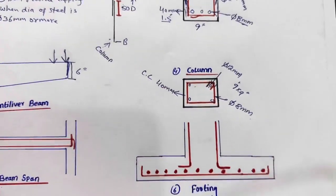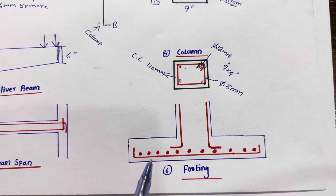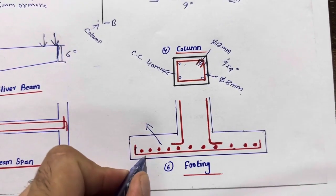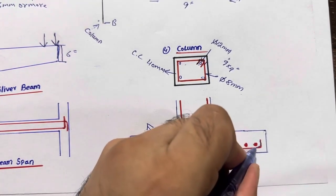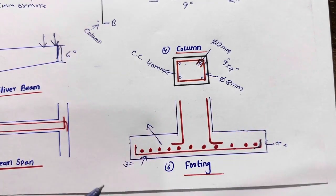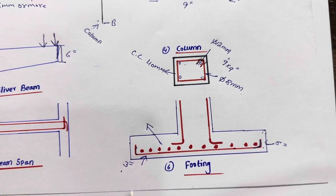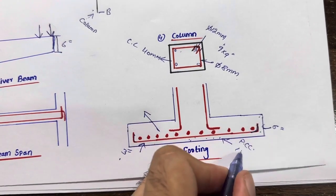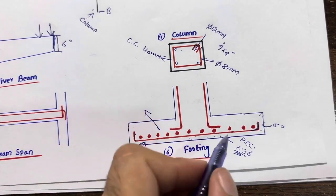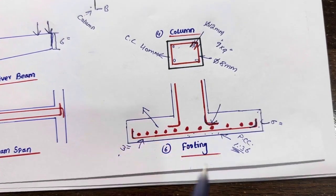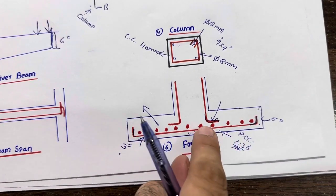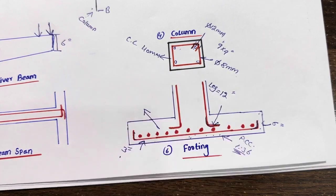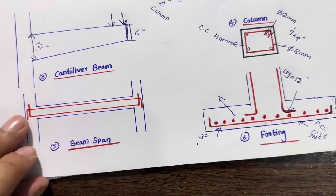For the footing, for a G+1 storey building, a single isolated footing is best — do not go beyond that. The concrete cover for the footing should be 75mm or 3 inches on all sides: top, bottom, left, and right. Hook length should not be less than 6 inches. PCC (Plain Cement Concrete) below the footing is very important — a mix of 1:4:8 or 1:3:6 is best. The leg length at the bottom of the footing, bent up at the top, should not be less than 12 inches.